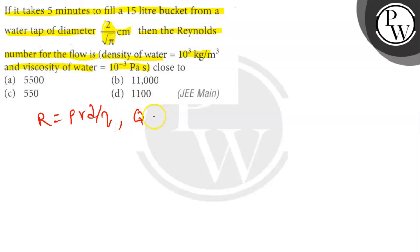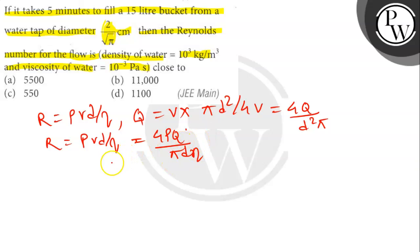Q equals V times πD²/4, so V = 4Q/πD². Therefore R = ρVD/η equals 4ρQ/πDη, where ρ is density of water.